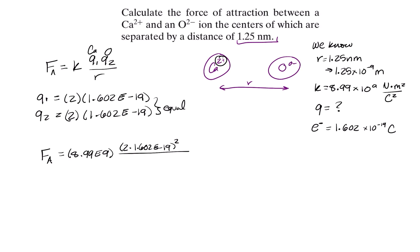And then that's over our r squared, which is 1.25 times 10 to the negative 9th squared. So we can go ahead and plug this into your calculator. I'll give you a few seconds to do that.